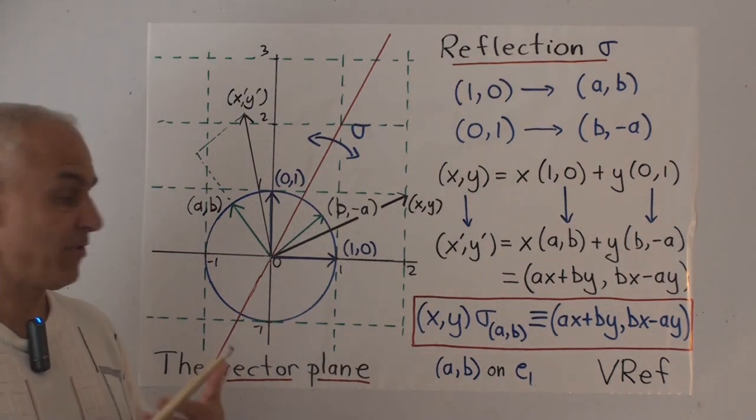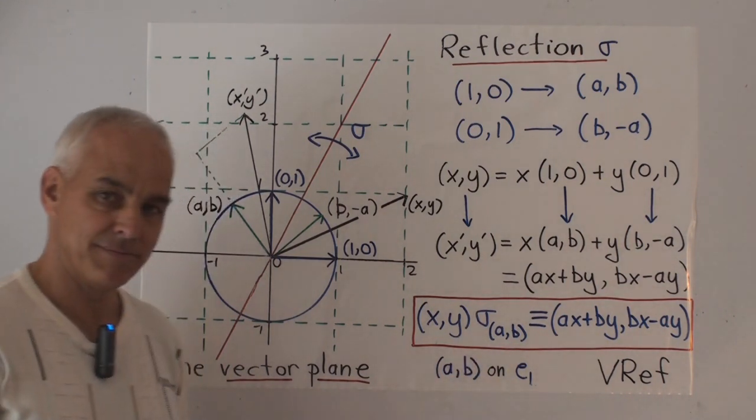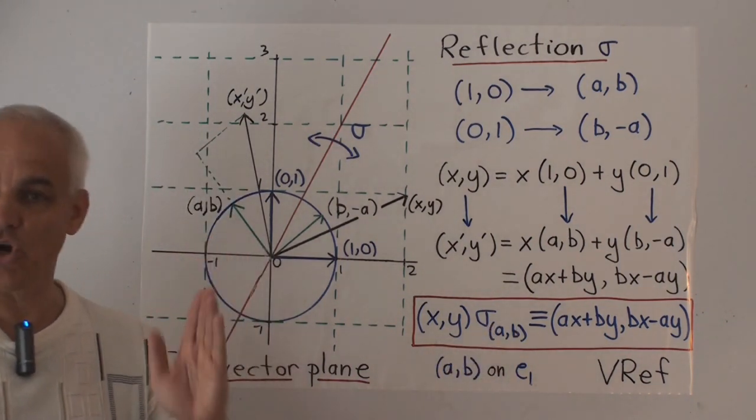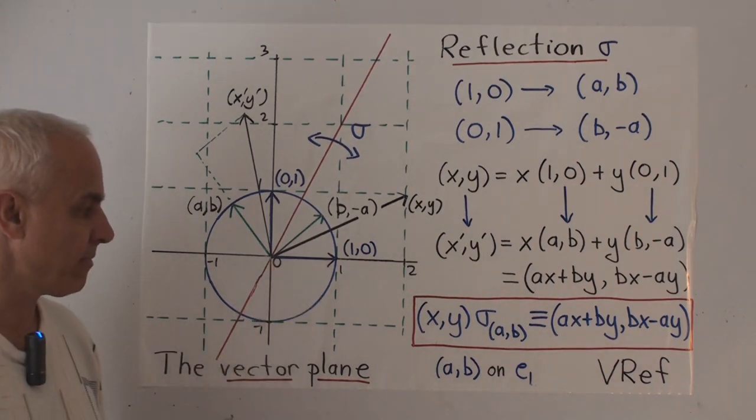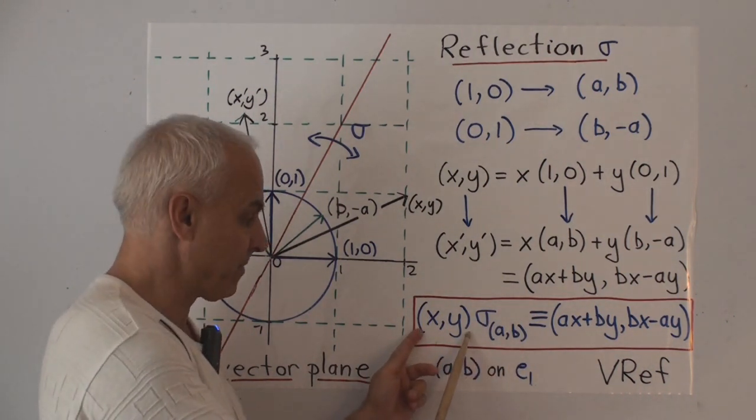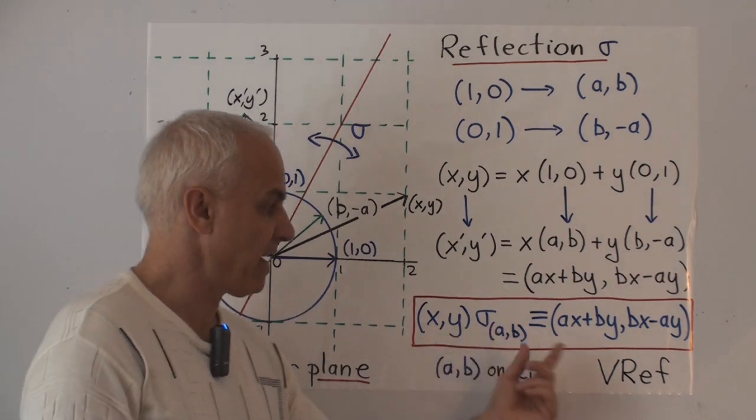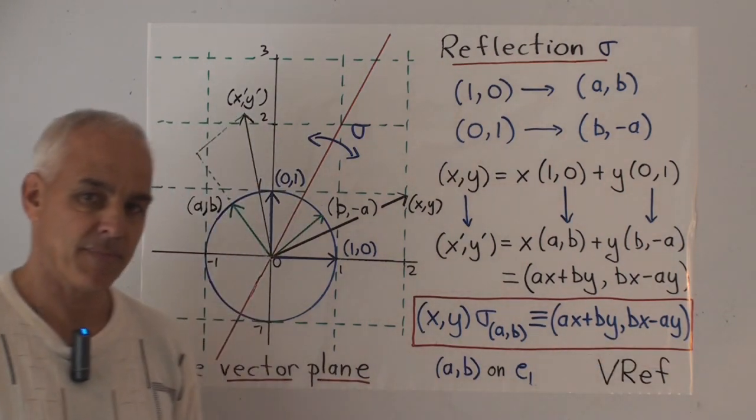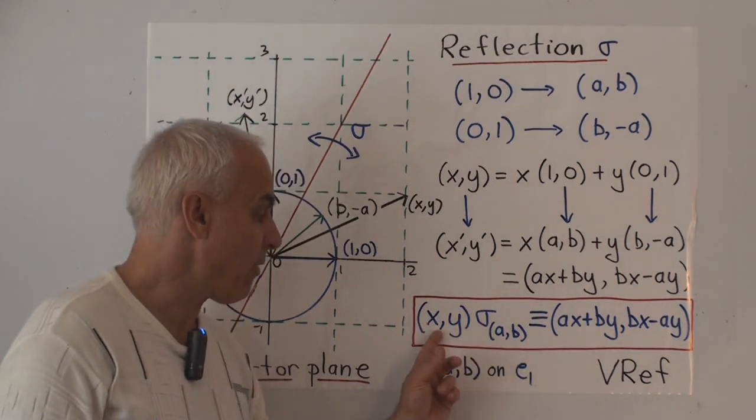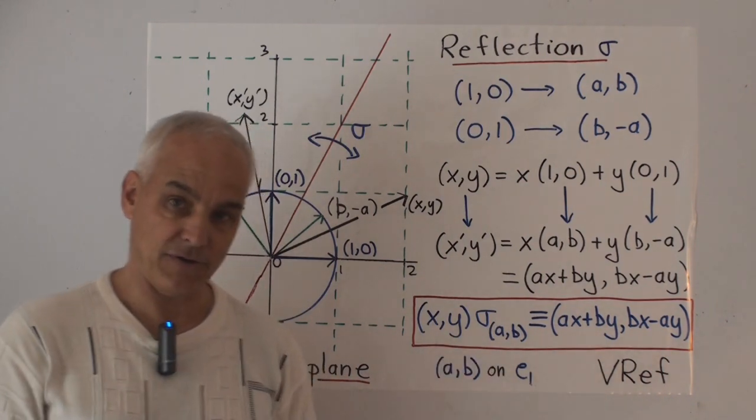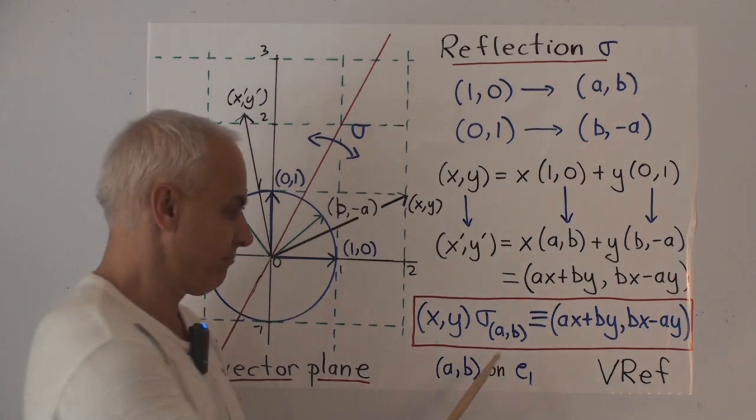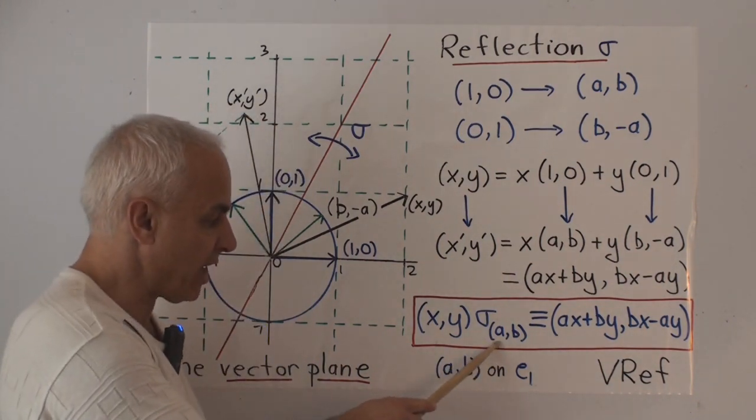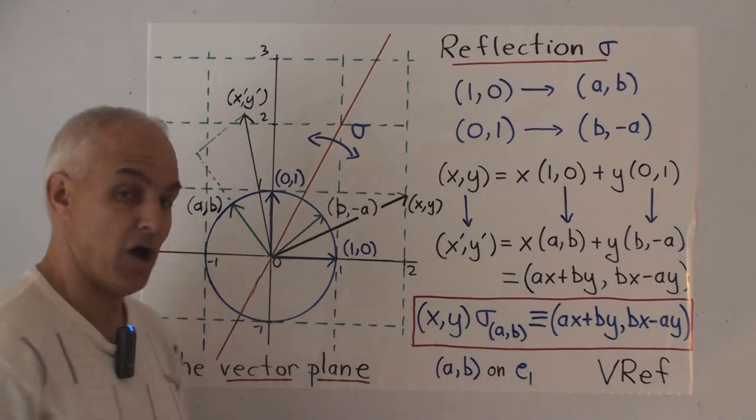So now we can define what a reflection is. A reflection is a symbol. We'll use sigma, the Greek letter sigma, and with a subscript AB, because it's specified or determined by that vector AB, the image of 1,0. And we say that this symbol interacts with the symbol for a vector. So x,y times this symbol, that combination, is by definition this, what we've just obtained over here. It's the new vector Ax plus By, Bx minus Ay. So we're defining this expression and how it interacts with the expression for a vector to obtain a new vector. That gives us a new mathematical object called a vector reflection, maybe VRef for short. And it's indexed or parameterized or labeled by a vector AB, which lies on the unit circle.